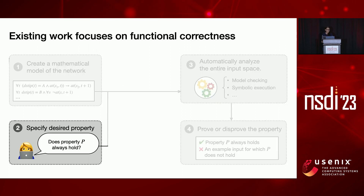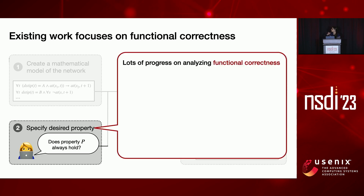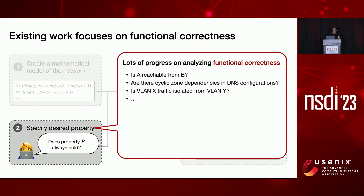If you look at all the different properties that people have been looking at over the past few years, most of it is focusing on functional correctness properties. For example, something like: is A reachable from B, is my tenancy configuration working properly, or is my traffic being isolated properly?